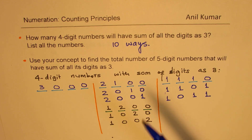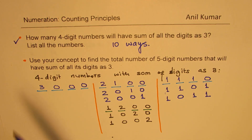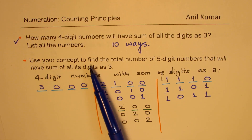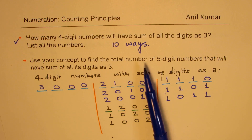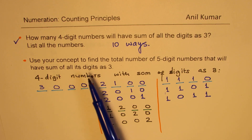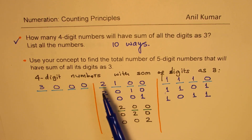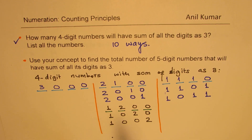Now let's try to answer the second part. We have already done the first part. The second part is: use your concept to find the total number of five-digit numbers that will have sum of all its digits as three. So the same thing, but this time we have to extend it for five-digit numbers. Let us see how to figure this out — we'll take it on a fresh page.